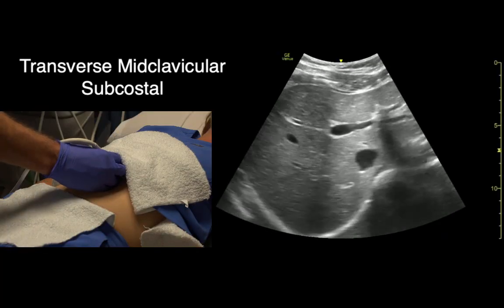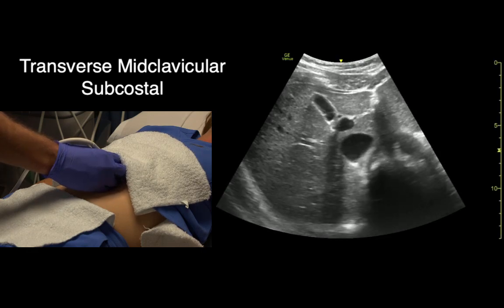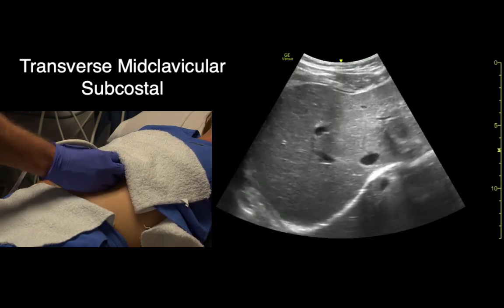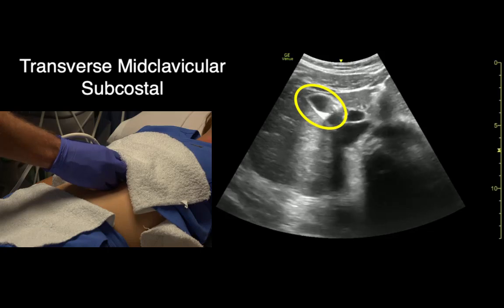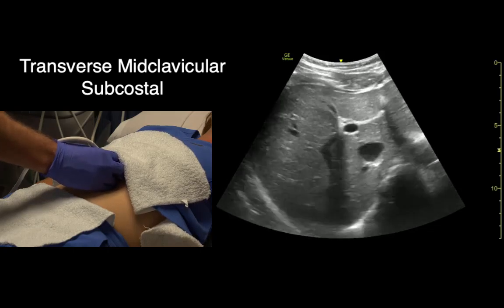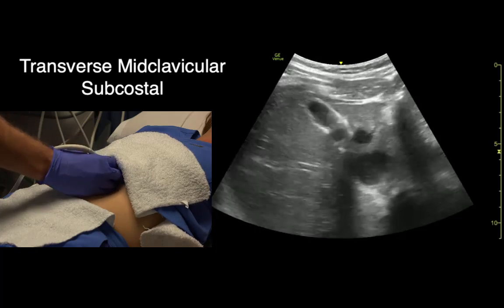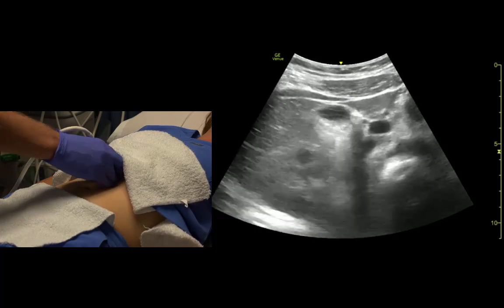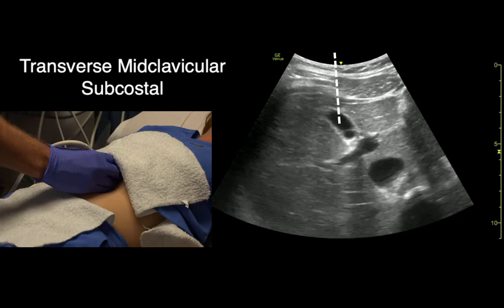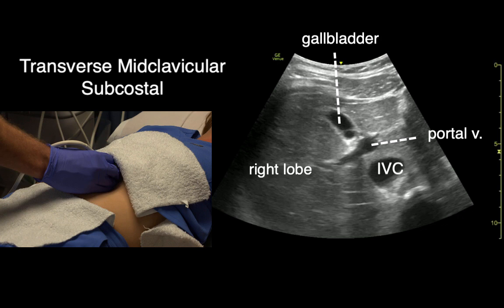Rotating counterclockwise and fanning down towards the feet, the gallbladder comes into view — her gallbladder has a little fold. The gallbladder is also a landmark to divide the right and left lobes of the liver.